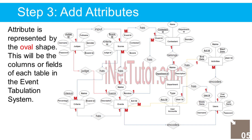Activities entity has the following attributes: 1. ActivityID — primary key (represented with underline). Event entity has the following attributes: 1. EventID — primary key, 2. Name, 3. Start Date, 4. End Date, 5. UserID — foreign key. Contestant entity has the following attributes: 1. ContestantID — primary key (represented with underline), 2. Name, 3. Gender.